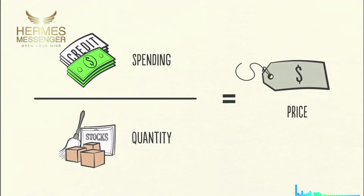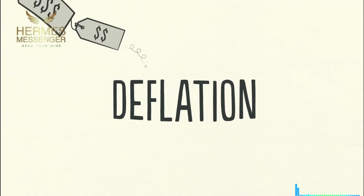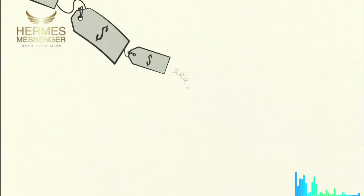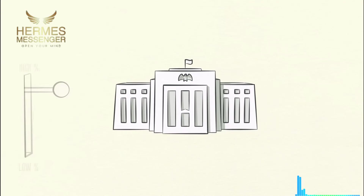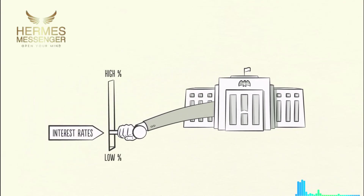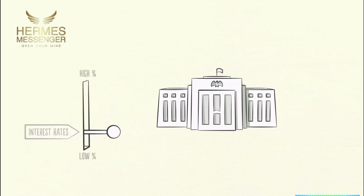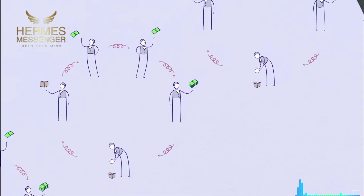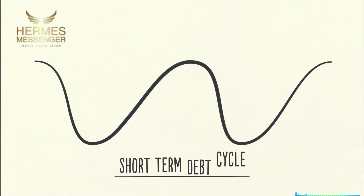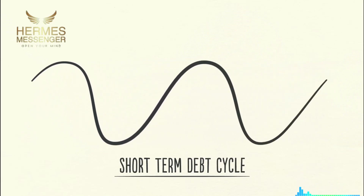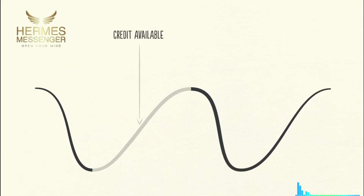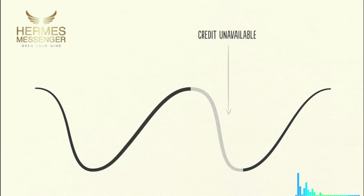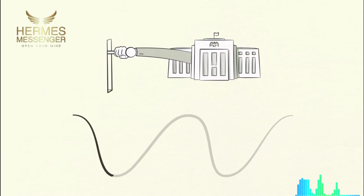When people spend less, prices go down — we call this deflation. Economic activity decreases, and we have a recession. If the recession becomes too severe and inflation is no longer a problem, the central bank will lower interest rates to cause everything to pick up again. With low interest rates, debt repayments are reduced, and borrowing and spending pick up, and we see another expansion. The economy works like a machine. In the short-term debt cycle, spending is constrained only by the willingness of lenders and borrowers to provide and receive credit. When credit is easily available, there's an economic expansion; when it isn't, there's a recession. This cycle is controlled primarily by the central bank and typically lasts five to eight years.